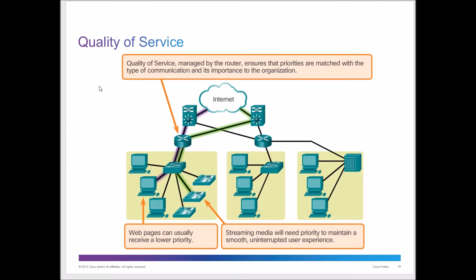Quality of service is managed by the router. It ensures that priorities are matched with the type of communication important to the organization. For example, video conference calls get higher priority; web pages and emails receive lower priority; but streaming media gets higher priority because if you can only hear every other word, it's not a good service. Phones and video streaming have higher priority in the QoS arena.